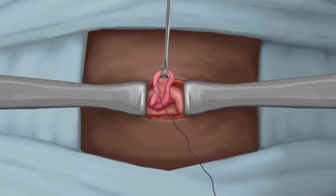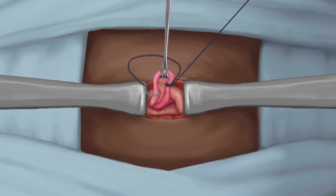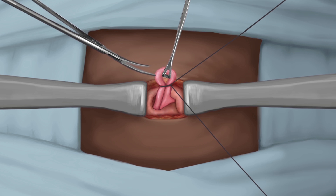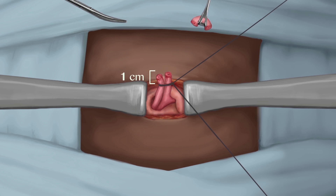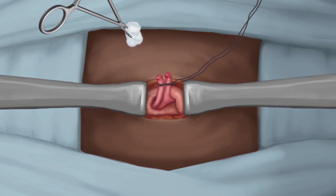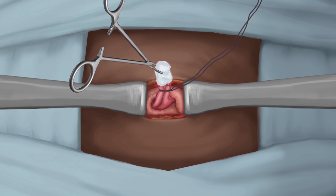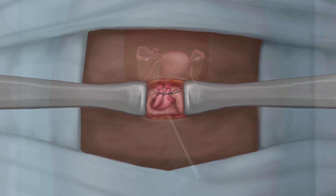Raise a 2 cm loop of the fallopian tube at the mid portion and tie with absorbable suture. Cut the fallopian tube loop with scissors while still holding the ligature. Ensure hemostasis and cut the ligature leaving 1 cm. Return the stump to the abdominal cavity.